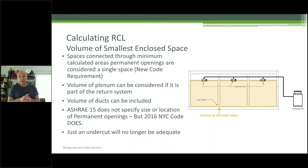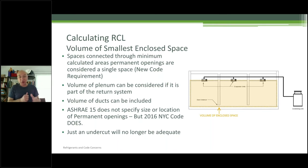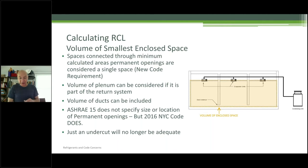The 2016 New York City code — coming very soon — does specify size and location of permanent openings. We worked very hard on finding a good scientific way of dealing with this to take away all the uncertainty from designers. Just an undercut will no longer be adequate. Why? Because you need an air makeup system. If the refrigerant escapes — 410A and CO2 are both heavier than air — if there's no makeup, nothing's happening and the refrigerant is not going anywhere. That's why an undercut alone is not adequate.